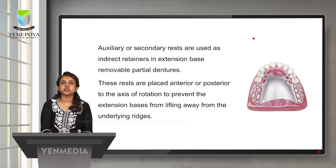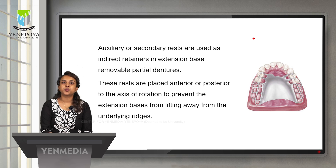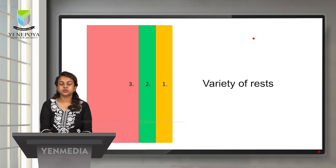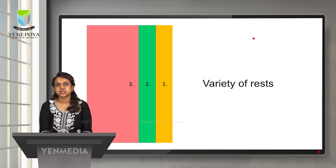Auxiliary or secondary rests are used as indirect retainers in extension base removable partial dentures. These rests are placed anterior or posterior to the axis of rotation to prevent the extension base from lifting away from the underlying ridges. There are also different varieties of rest based on where they are placed.